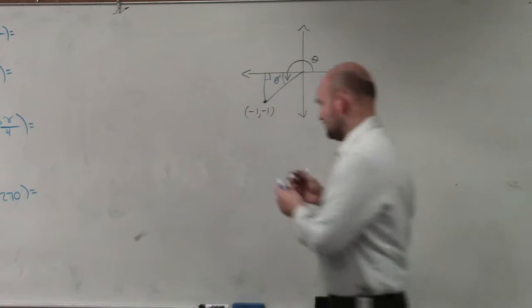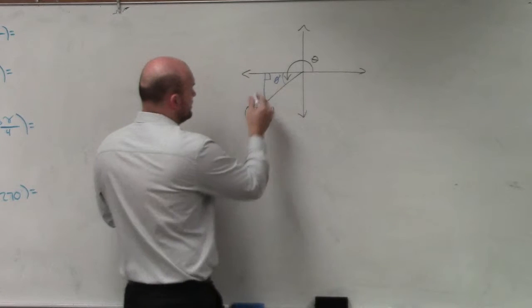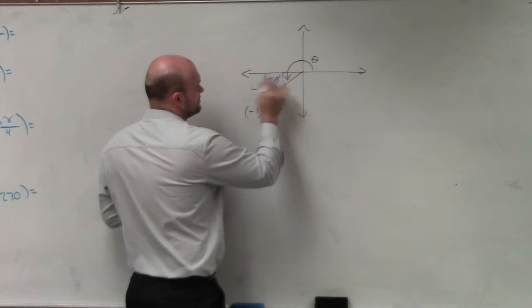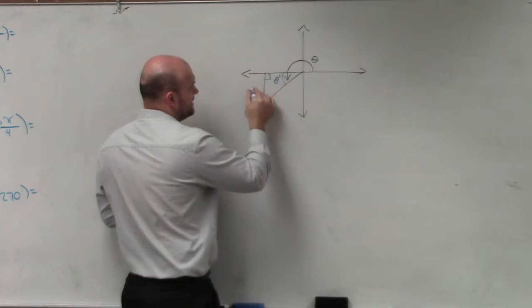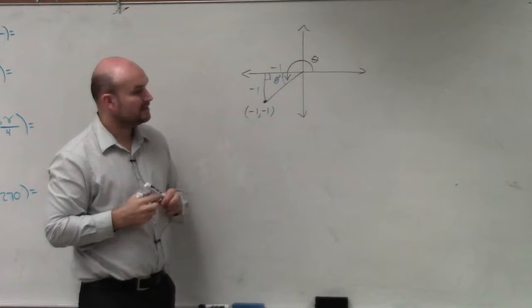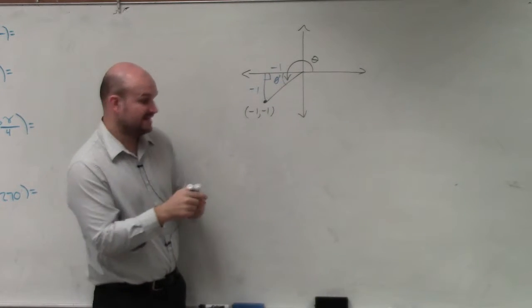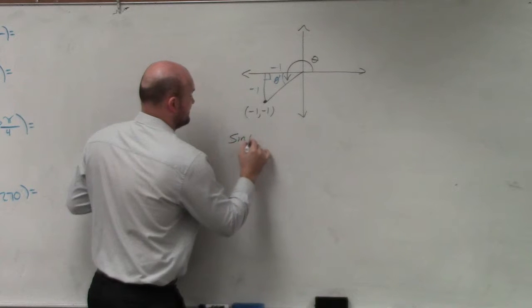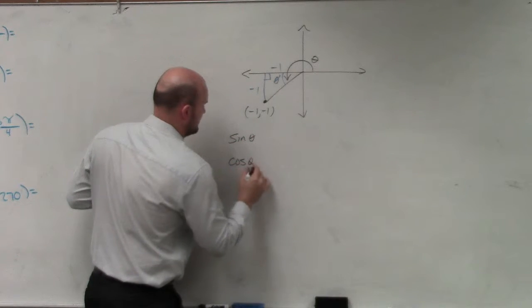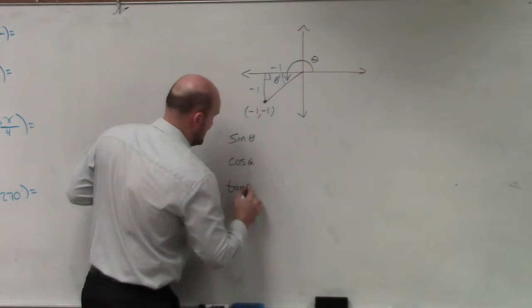Correct? So our values of our triangle are negative 1. Sorry. Negative 1, yep. And negative 1. Do I have enough information? Because I need to find the sine of theta, cosine of theta,